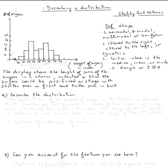The topic is describing a distribution. So let's read the problem. There's a histogram here. This display shows the height of some of the singers in a chorus collected so that the singers could be positioned on stage with shorter ones in front and taller ones in back. And we need to describe the distribution.